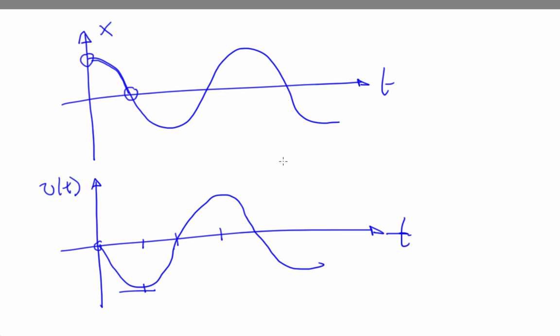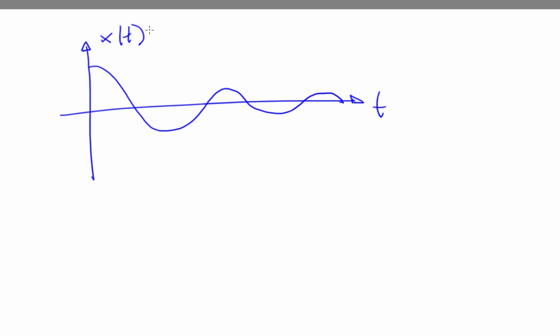One last point here. The way we've written things, the mass will oscillate forever. In the real world, that doesn't happen. Instead, the oscillation will die out because of friction. And it dies out faster if the friction is higher. So really, there should be another term in the differential equation to model this. It should look something like minus beta times velocity. So the overall equation should look more like this.